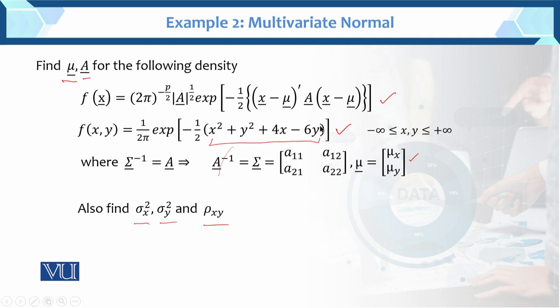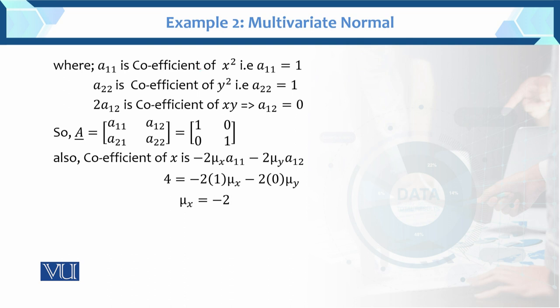Looking at this equation: the coefficient of x squared is equal to 1, the coefficient of y squared is equal to 1, the coefficient of x is equal to 4, and the coefficient of y is equal to 6. The coefficient of xy is equal to 0, since xy is not present in our given function. So A is equal to this matrix.